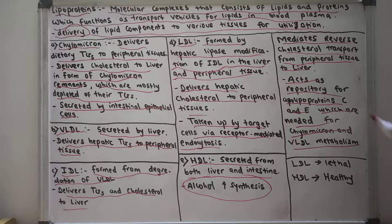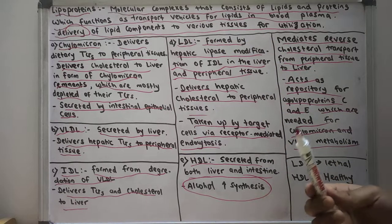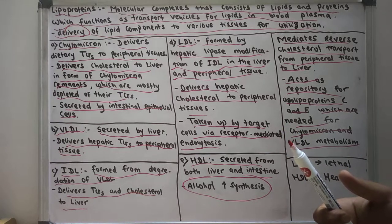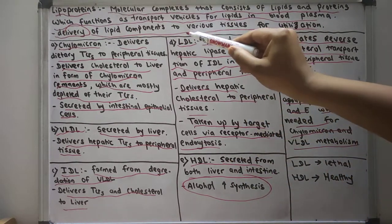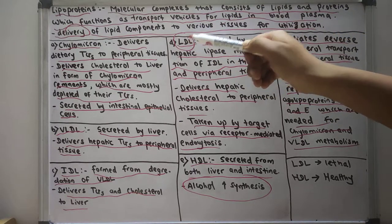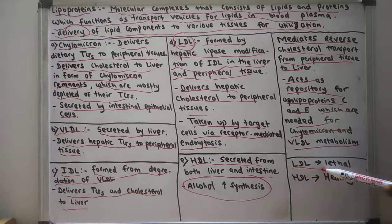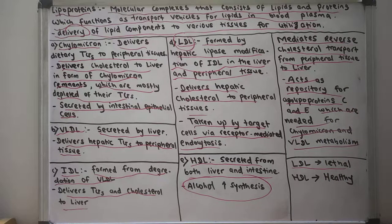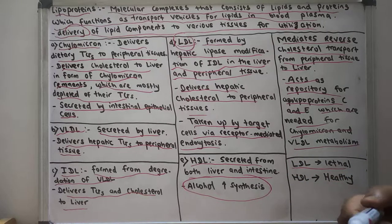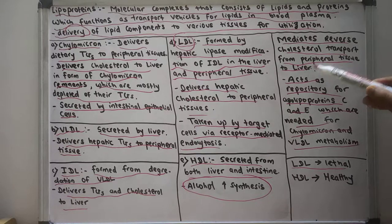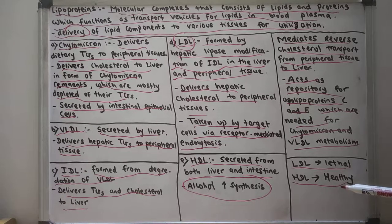In summary, LDL delivers hepatic cholesterol to peripheral tissues, meaning arterial atherosclerosis is mainly driven by LDL. If there is an increase in LDL, it is very bad for health — LDL is considered lethal. HDL, on the other hand, mediates reverse cholesterol transport, transferring cholesterol from peripheral tissues to the liver, thereby decreasing plasma cholesterol levels. So HDL is a healthy lipoprotein, whereas LDL is not.